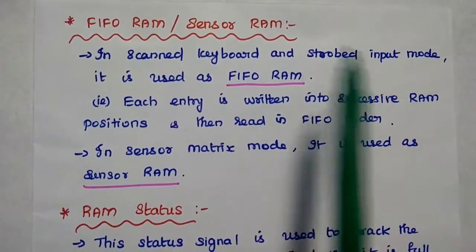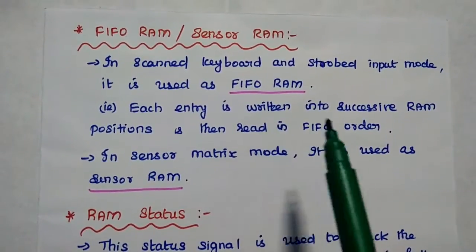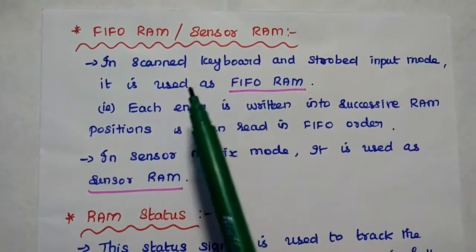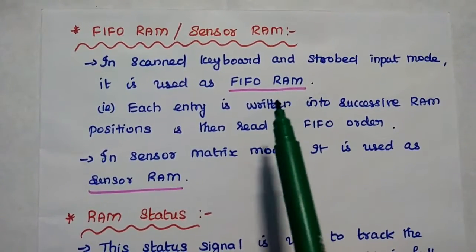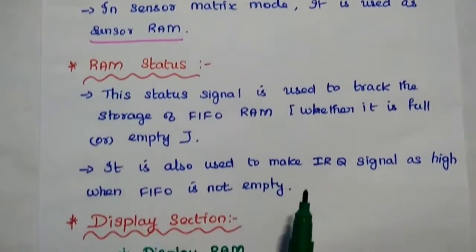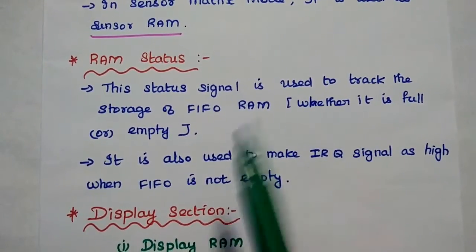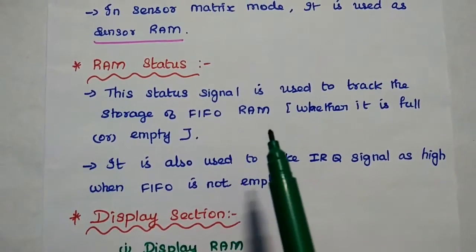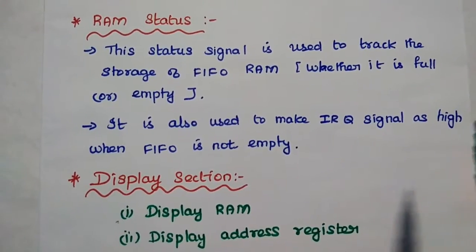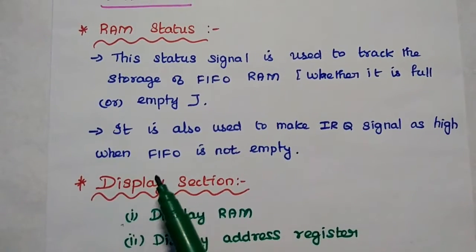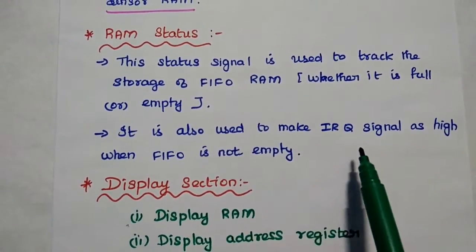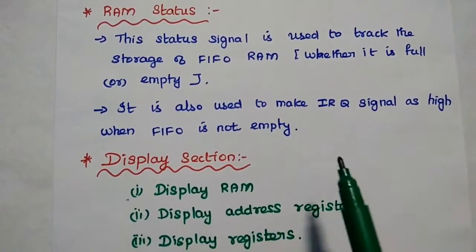In scanned keyboard and strobed input mode, the RAM is used as FIFO RAM — each entry is written into successive RAM positions and read in FIFO order, that is first-in first-out order. In sensor matrix mode, it is used as sensor RAM. The RAM status signal is used to track whether the FIFO RAM is full or empty, and it also generates an interrupt request signal to the processor when the FIFO is not empty.